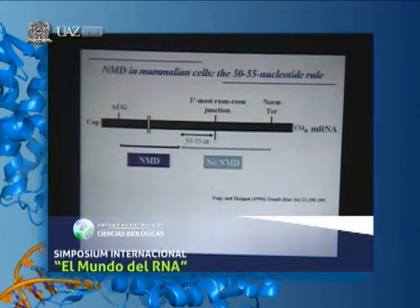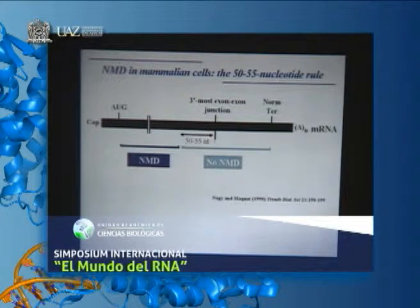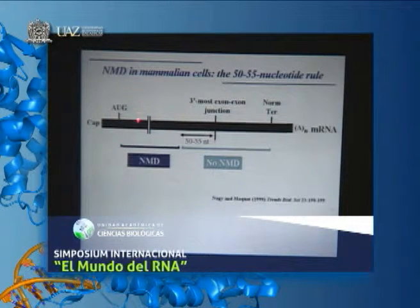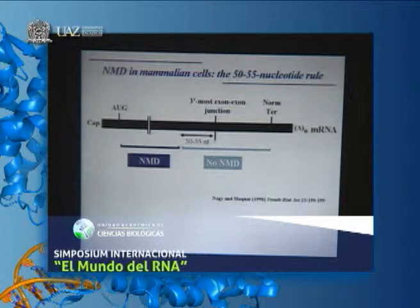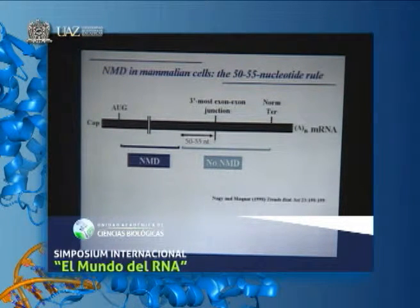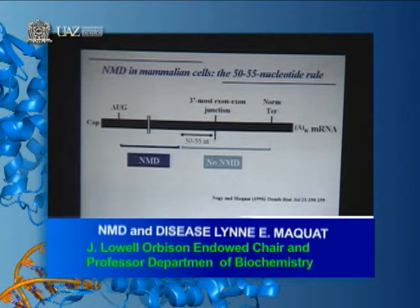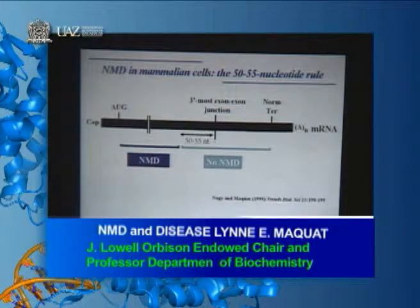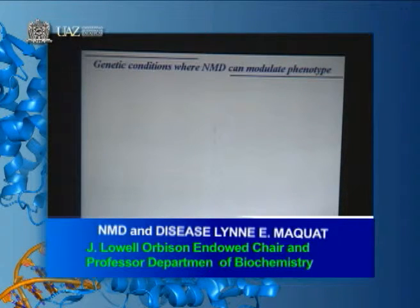I will show you why this is in a minute. As with every rule, there are exceptions. One exception we found is if there is a PTC and then the possibility of translation re-initiation at an internal AUG initiation codon between that PTC and the next exon-exon junction—NMD will be inhibited.